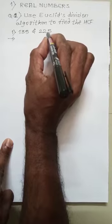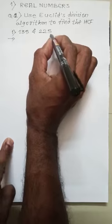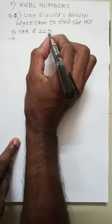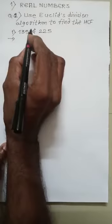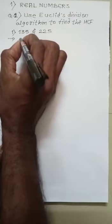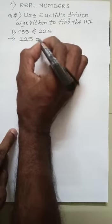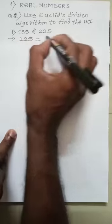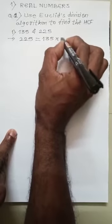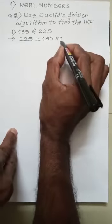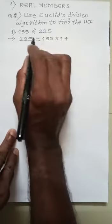We start with the larger integer, 225. Now we apply the division lemma to 225 and 135. We take the larger number first as the dividend and 135 as the divisor. 135 into 1 equals 135. When we divide 225 by 135, the quotient is 1 and the remainder is 90.